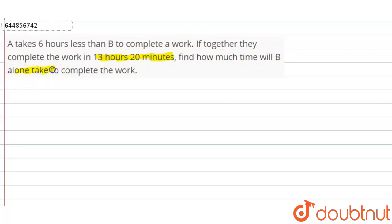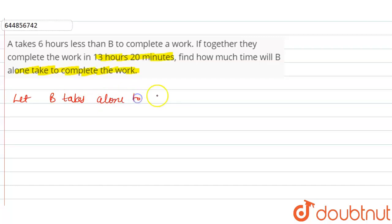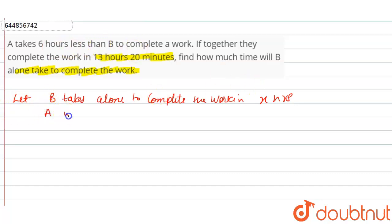According to the question, let B take x hours alone to complete the work. According to the question, if B takes x hours, A will take 6 hours less than B, so A will take x minus 6 hours to complete the work.